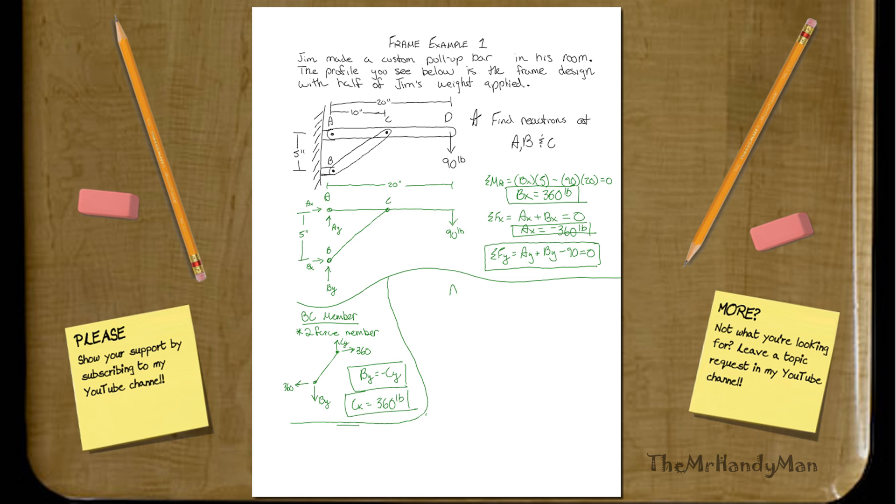Then we'll touch on the AC member, which will look something along the lines of this. And you'll have your C_Y, which is going to be pulling downward. You're going to have your A_Y. You're going to have 360 going this way to the left. And we also have 90 pounds over here.